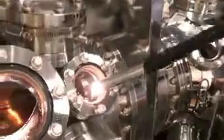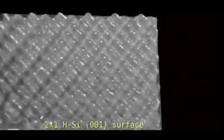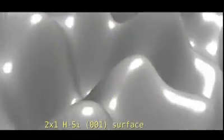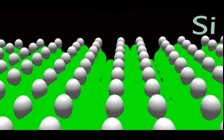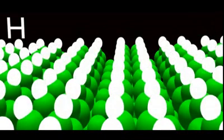STM can produce a topographic image of the hydrogen terminated 2x1 silicon 001 surface. Here, the bright protrusions are the locations of the hydrogen atoms, shown in white. These are well organized into lines two atoms wide, called diamond rows.